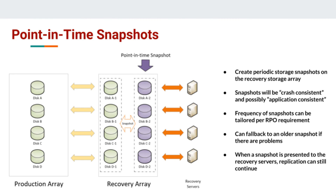When we map our storage to our recovery servers, what we map is actually going to be the snapshot rather than the original disks. This gives us a little bit of flexibility because we can pick the point in time we want, but we can also have the option to keep replication running while we're doing something like a DR test. If you have to break replication in order to do a DR test, you're basically exposing yourself to potential data loss for the duration of the test while your replication is down. So it's nice to have that little bit of extra flexibility.